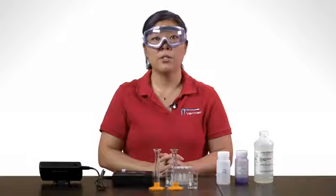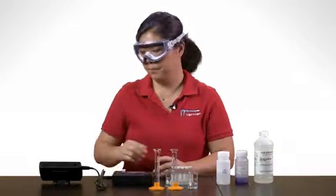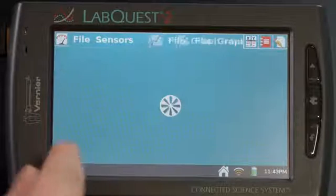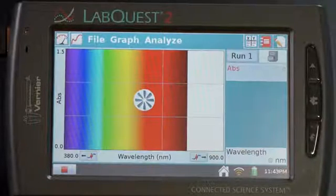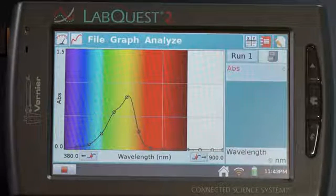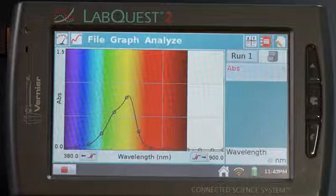Tap on the green arrow to start data collection. You will see a graph of data. Tap on the red square to stop the data collection.